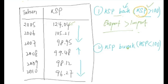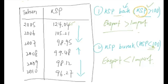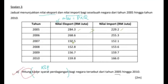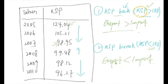Begitu juga dengan keadaan yang sebaliknya. Kalau KSP yang tak baik, yang kurang memuaskan atau buruk, di mana KSP dia adalah kurang daripada 100, apa maksudnya? Terbalik dengan situasi tadi, di mana nilai ekspor kurang daripada nilai import. Contoh tahun 2007, KSP kurang 100. Nilai ekspor 150.5, nilai import 152.1. Nilai import lebih besar daripada nilai ekspor. Itulah sebab KSP dia adalah kurang 100, itu dikira KSP yang kurang memuaskan.